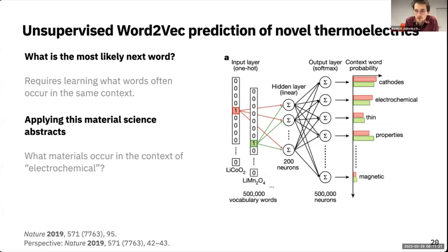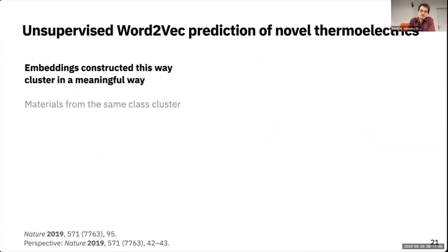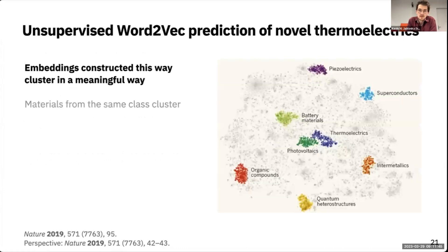This group from Berkeley Lab mined abstracts from material science and trained this word-to-vec model on those abstracts. An interesting thing is that if you have this hidden space where you have a vector in two dimensions for each compound, you map your word into some vector space, and you can look where those compounds cluster. They cluster meaningfully - battery materials, organic compounds cluster close together in this vector space without any labels, just by training on the abstracts.